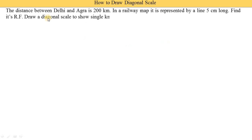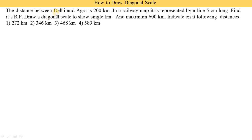The distance between Delhi and Agra is 200 kilometers. In a railway map, it is represented by a line that is five centimeters long, meaning 200 kilometers is represented by five centimeters — so one centimeter represents 40 kilometers. We need to find its RF (representative fraction), then draw a diagonal scale to show single kilometers with a maximum distance of 600 kilometers.